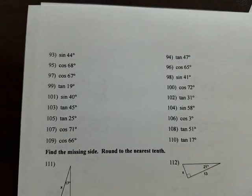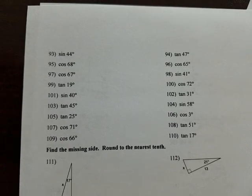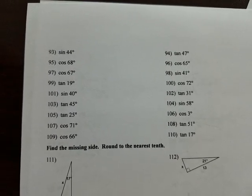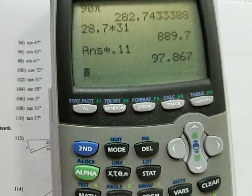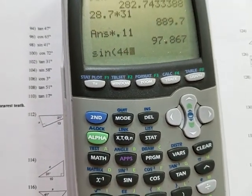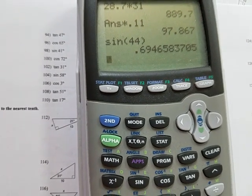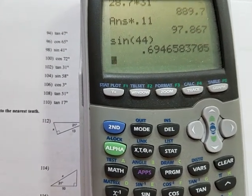So we know, for instance, on 93, sine of some angle is equal to opposite over hypotenuse. Well, it's saying that sine of 44 degrees is equal to 0.6947, if I round that.